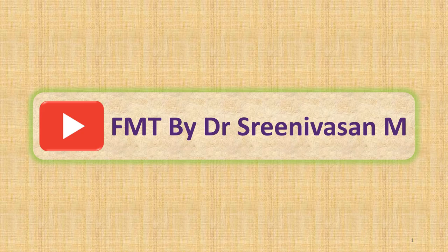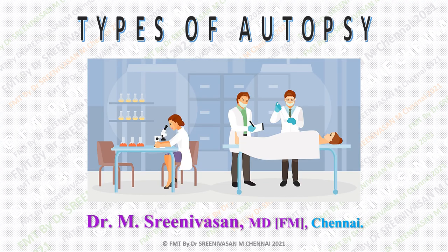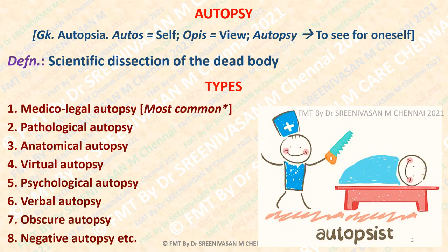Hello friends, welcome back. In this session we are going to discuss about types of autopsy. The term autopsy has been derived from the ancient Greek word 'autopsia'. 'Autos' means to see for oneself, or simply self-examination. In practice, autopsy has been defined as scientific dissection of the dead body. So what are the types of autopsy?